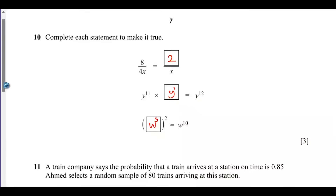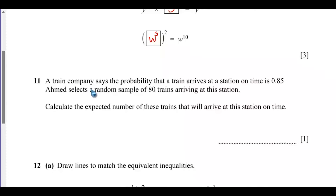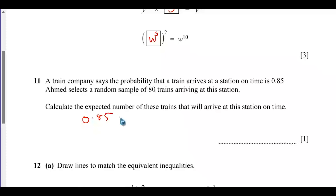Question 11: A train company says the probability that a train arrives on time is 0.85. Ahmed selects a random sample of 80 trains. To calculate the expected number arriving on time, multiply 0.85 by 80, which gives 68. So 68 trains are expected to arrive on time.